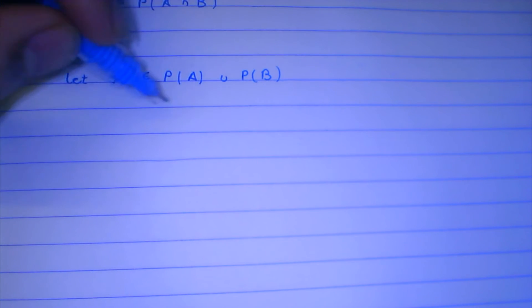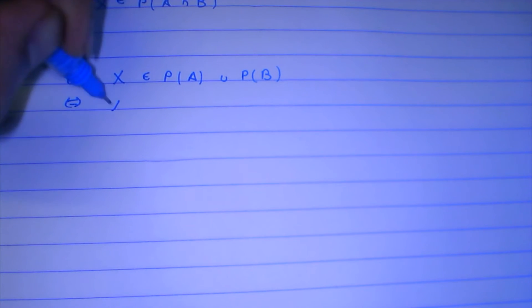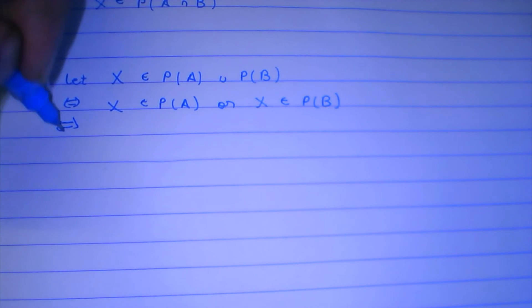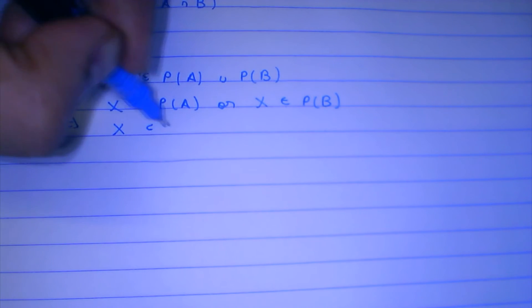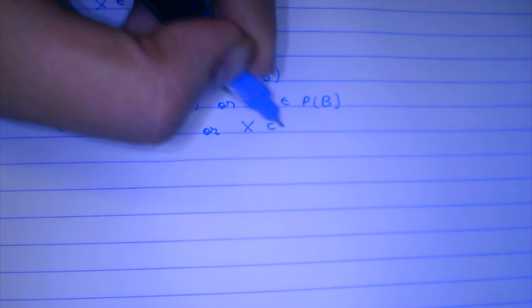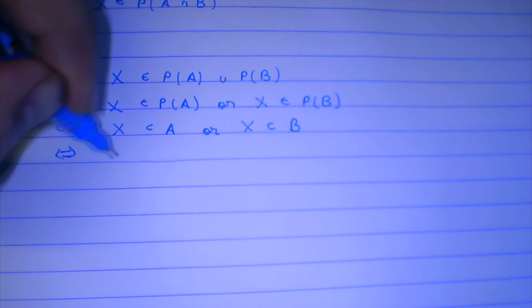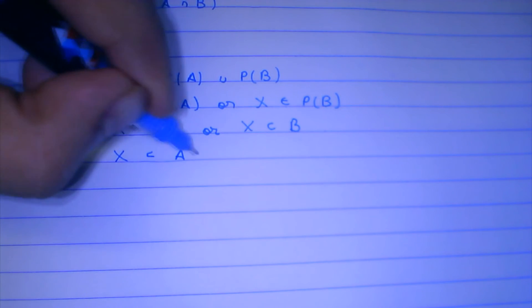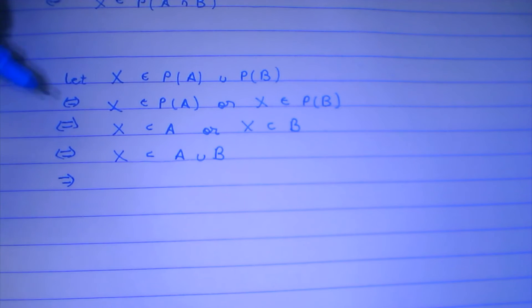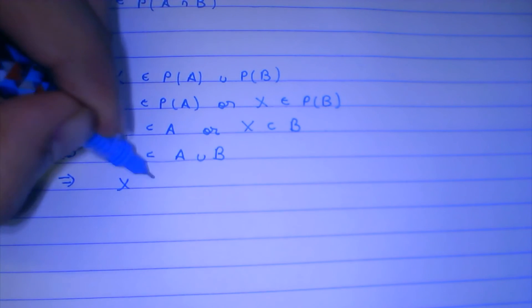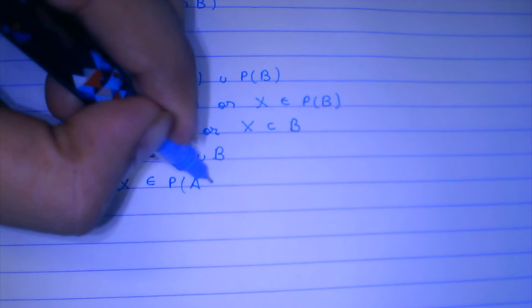Now let us look at the other thing. Let X belong to power set of A union power set of B, which means that X belongs to power set of A or X belongs to power set of B, which means that X is a subset of A or a subset of B, which means that X is a subset of A union B. That implies that X belongs to power set of A union B.